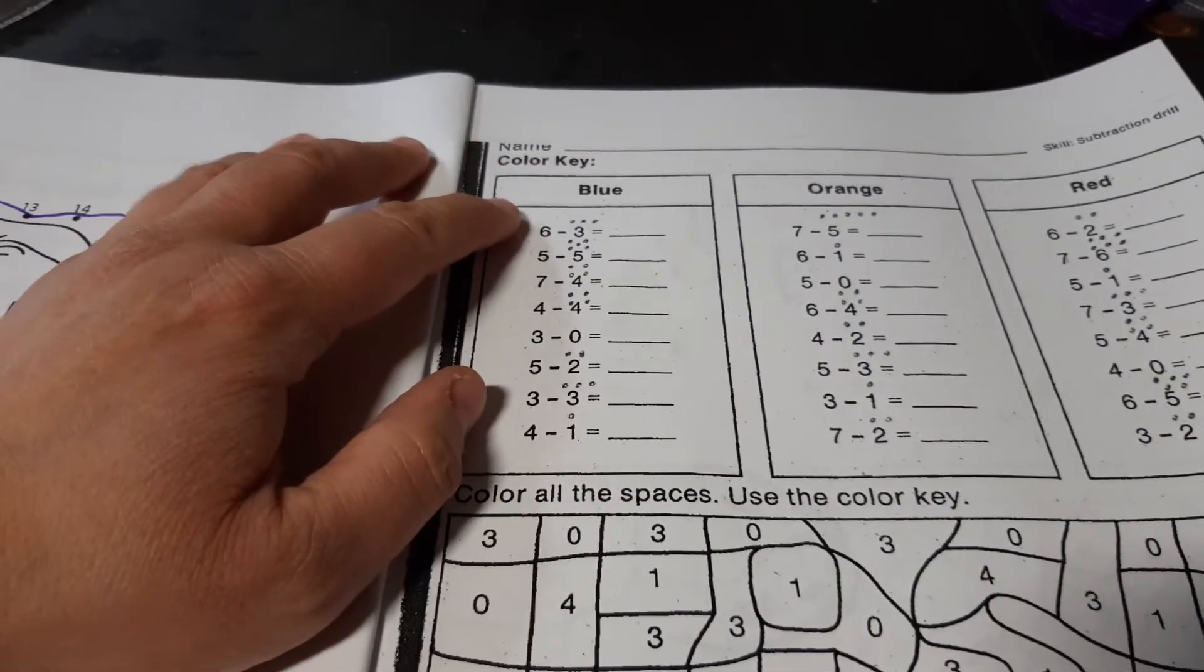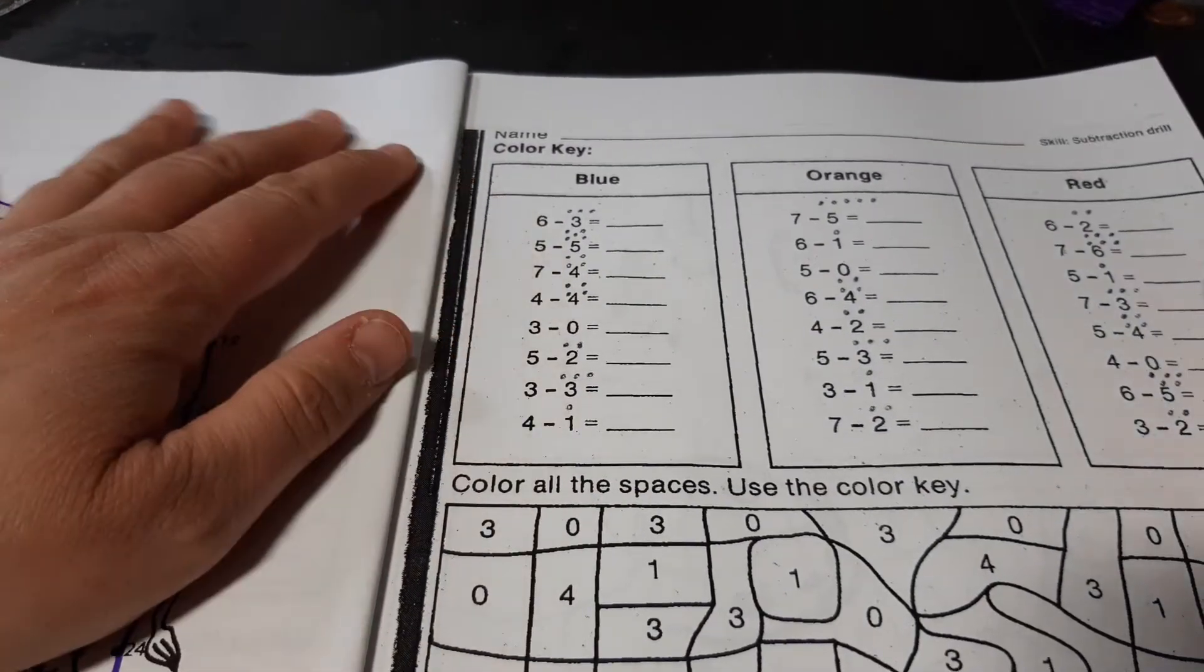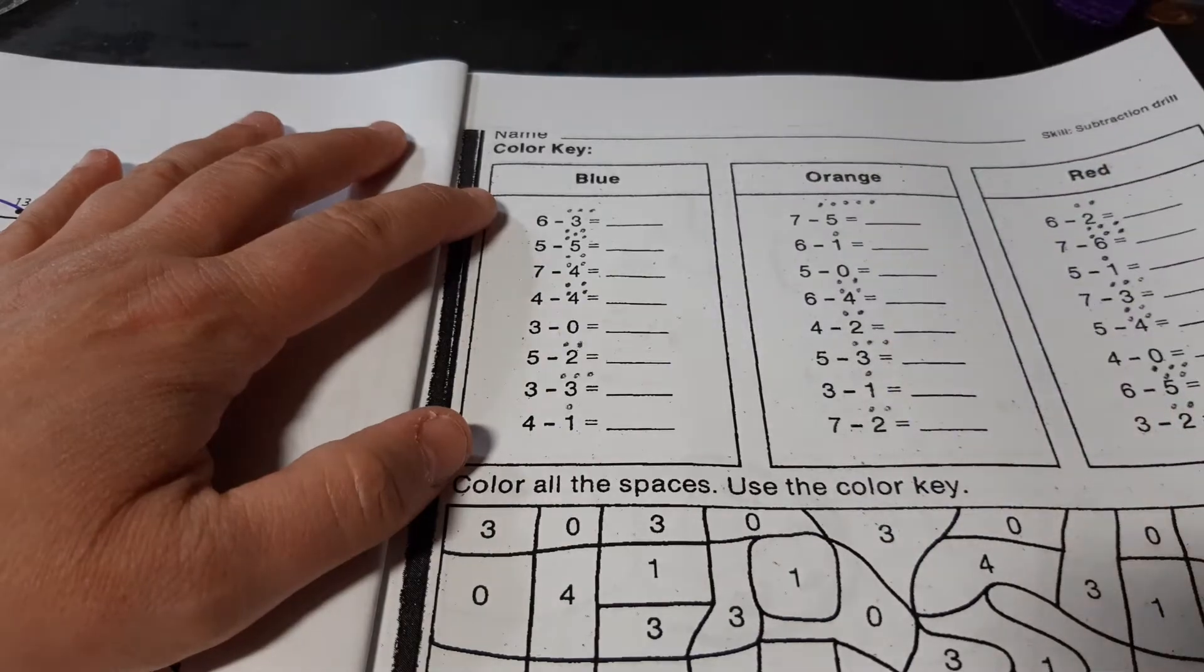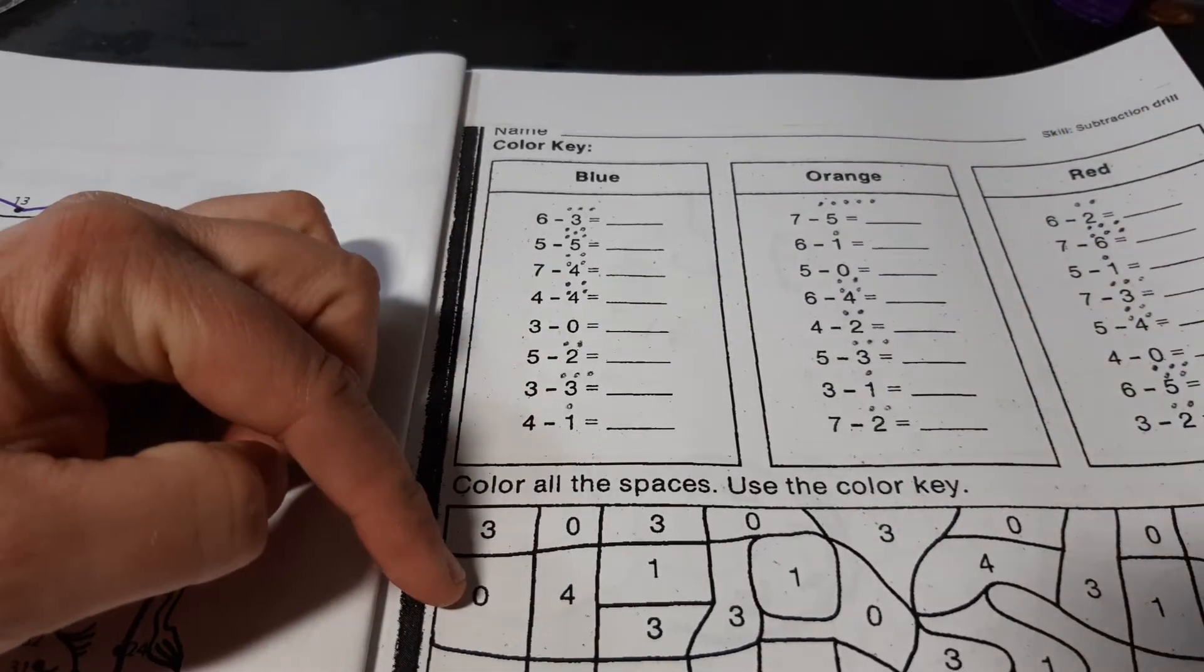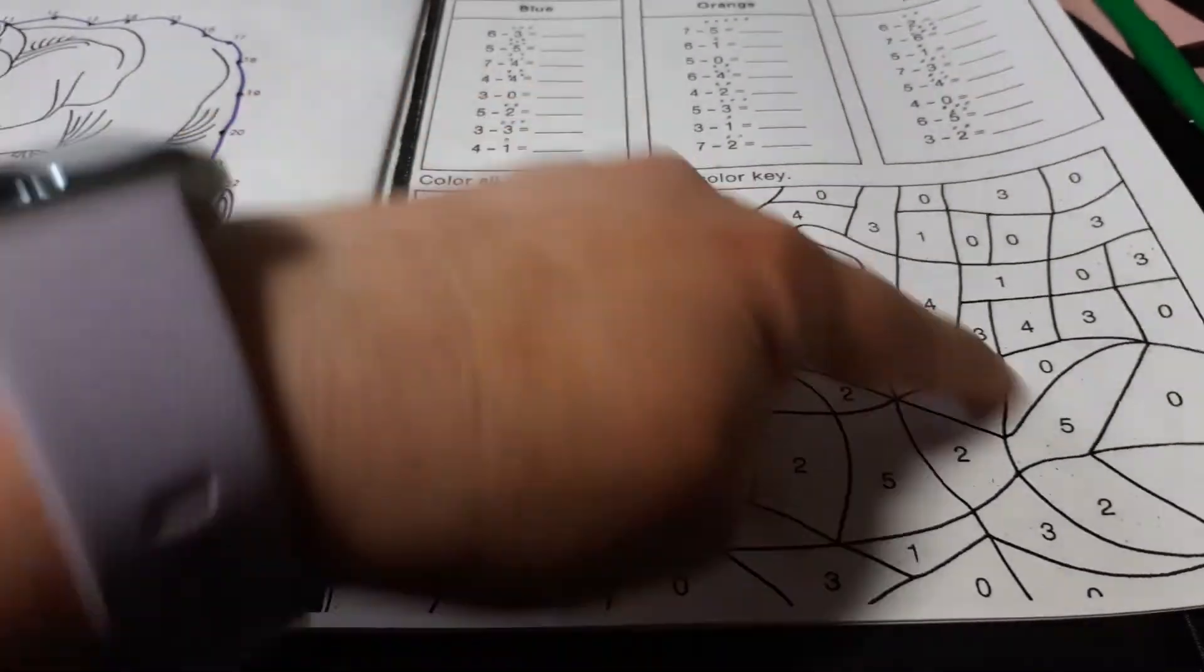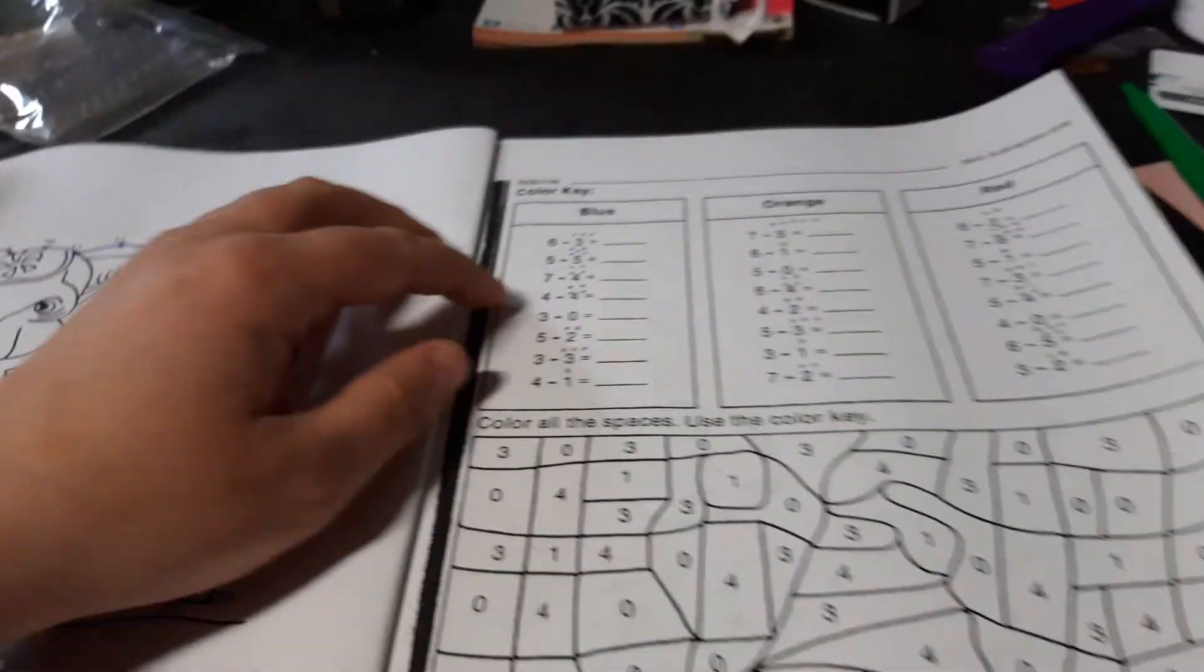Hello. Alright, so for this one, we're going to do some subtraction up at the top, and then when we get done, we can use the answer key to color in our picture.